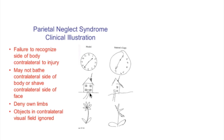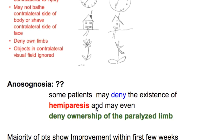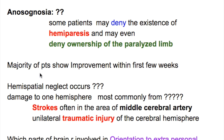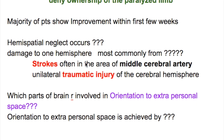This is the normal picture for comparison. When the patient was asked to draw, he couldn't draw the left side of the picture. What is Anosognosia? Some patients may deny the existence of hemiparesis and may even deny ownership of their paralyzed limb. This is known as Anosognosia. The majority of patients with neglect syndrome show improvement within the first few weeks.